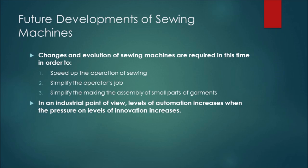Future developments of sewing machines. Changes and evolution in sewing machines are required in this time. Its goal is to speed up the operation of sewing, simply to make the operator's job easy, and to make the assembly of small parts of garments also easy. In an industrial point of view, our levels of automation increase when the pressure on levels of innovation increases.